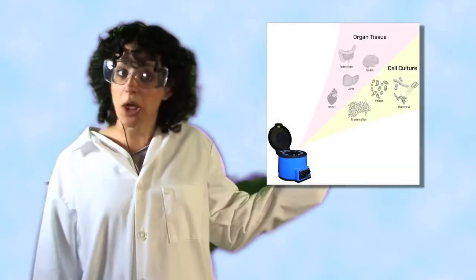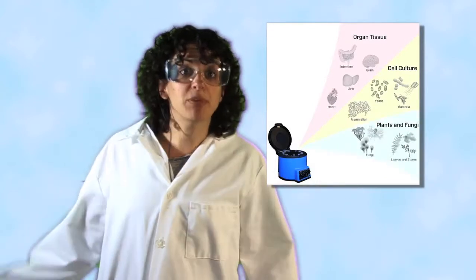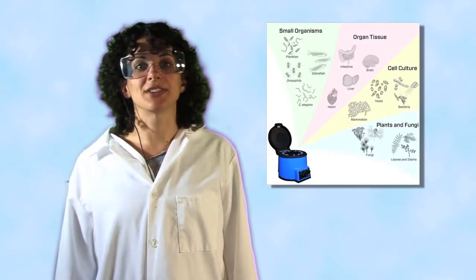Don't forget that the Bullet Blender can process a vast range of samples, including organ tissue, cell culture, fungi and plant tissue, and small organisms. It can even handle samples as tough as mouse bones, tumor, skin, difficult to lyse yeast, and algae.